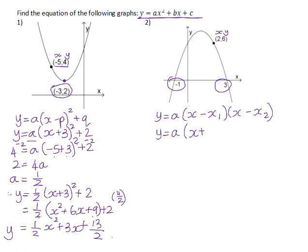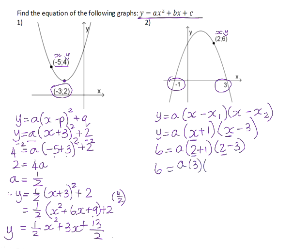If we substitute in, it will have (x - (-1)) and (x - 3). We can now use the coordinates of the extra point that we're given. This x is the same x value, so we substitute 2 in place of that x in both cases. That gives us (2 + 1)(2 - 3), so we have -3a = 6, and a = -2.